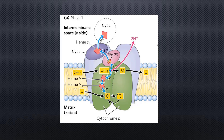Cytochrome B has two specific heme groups: heme BL and heme BH. That same electron traverses to heme BH, and then that electron reduces a fresh molecule — the oxidized form of ubiquinol, which also traverses through the inner mitochondrial membrane lipid bilayer and attaches with the cytochrome B molecule.